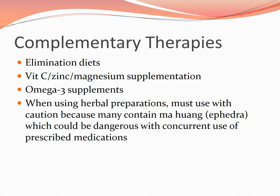Ephedra used to be used as a stimulant for asthma but was misused — people were taking excessive amounts, and it was also used in methamphetamine production, so it is now essentially outlawed. Ma huang is an herbal form of ephedra; it is not regulated by the FDA. We have to be careful about what patients are taking at home.